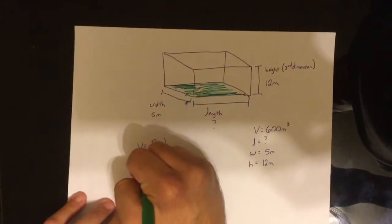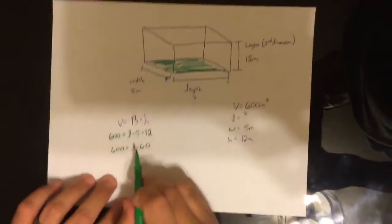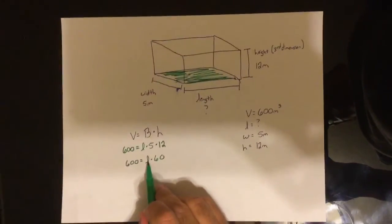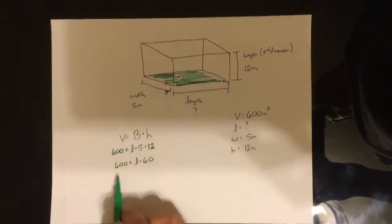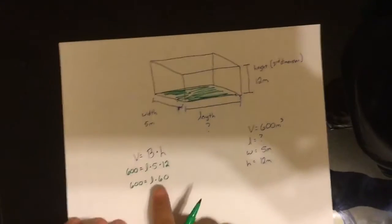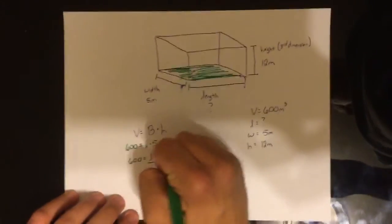Well, 5 times 12 is 60. Now, some unknown number L times 60 has to give me 600. So what's the inverse of multiplying by 60? Dividing! Dividing by 60.